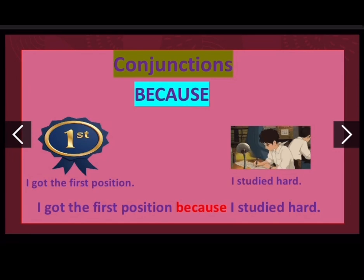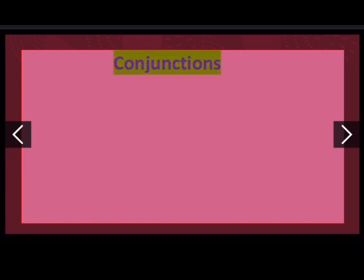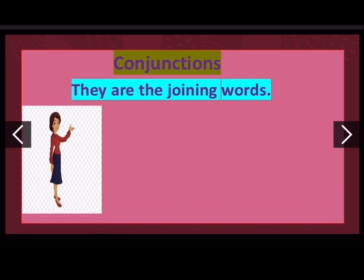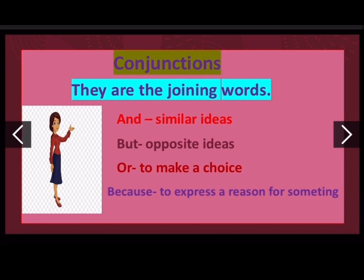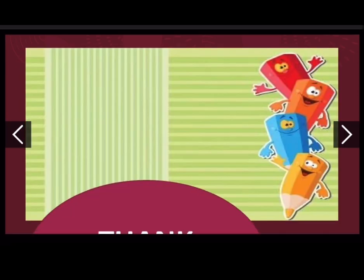So children, what have we learned today? We have learned that conjunctions are the joining words. The conjunction 'and' is used to join similar ideas. The conjunction 'but' is used to join opposite ideas. The conjunction 'or' is used to make a choice. And the conjunction 'because' is used to express a reason for something. I hope you all have understood the topic. Keep practicing. Thank you for watching.